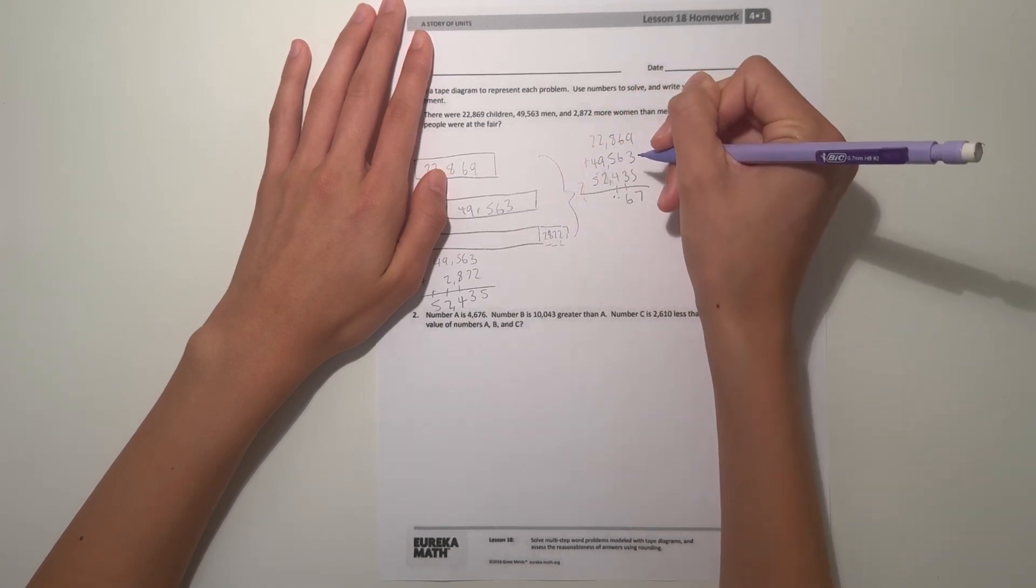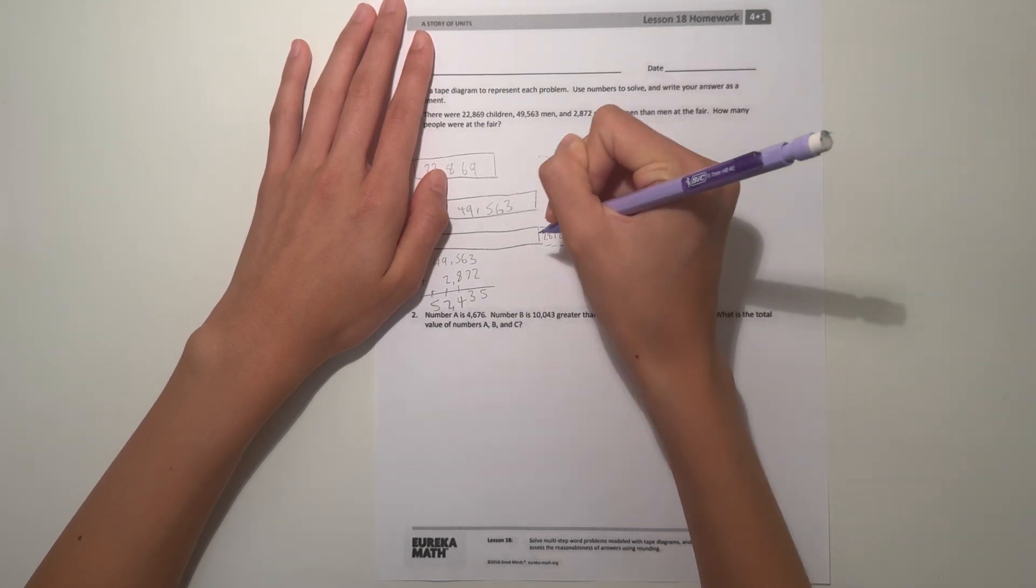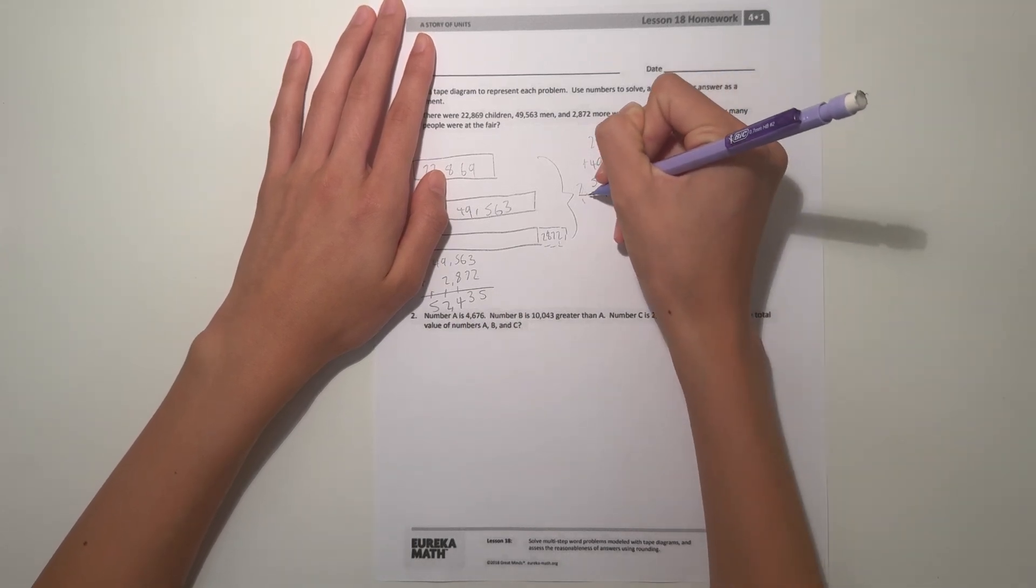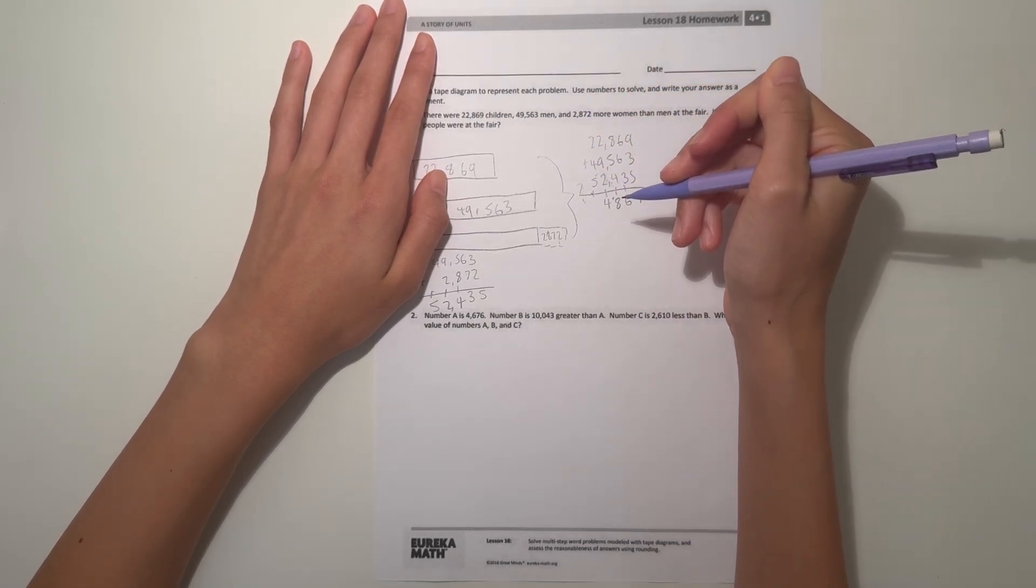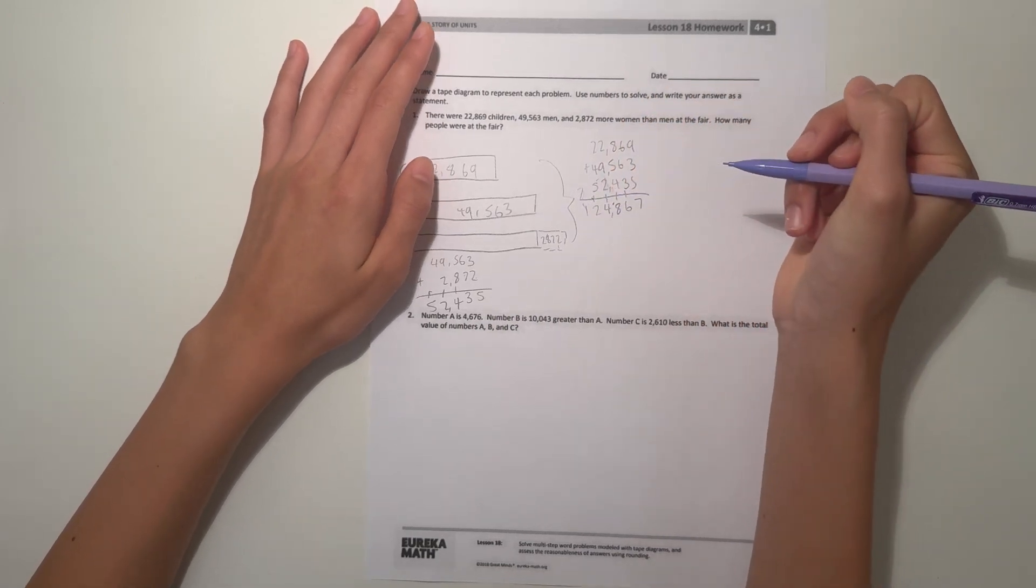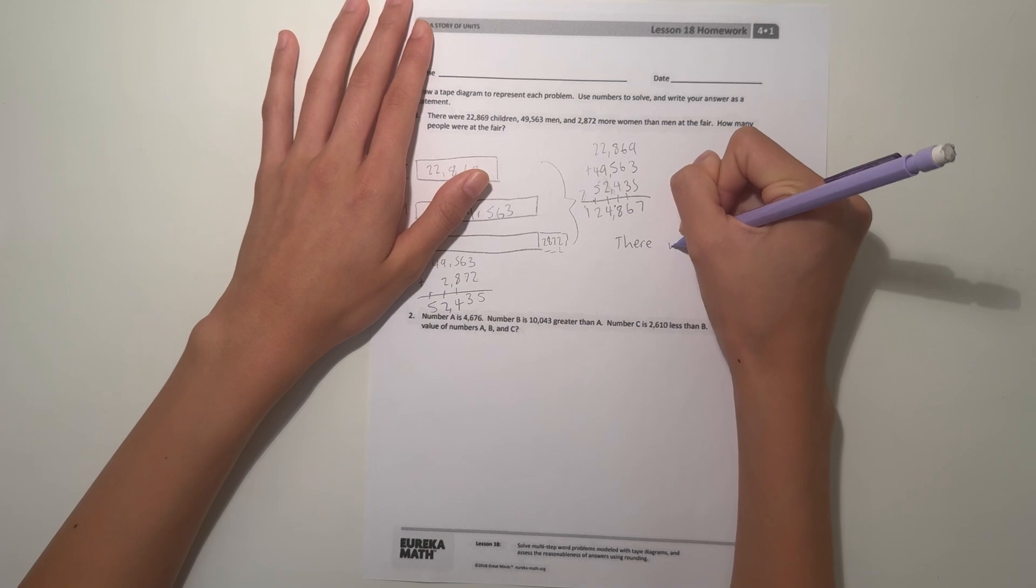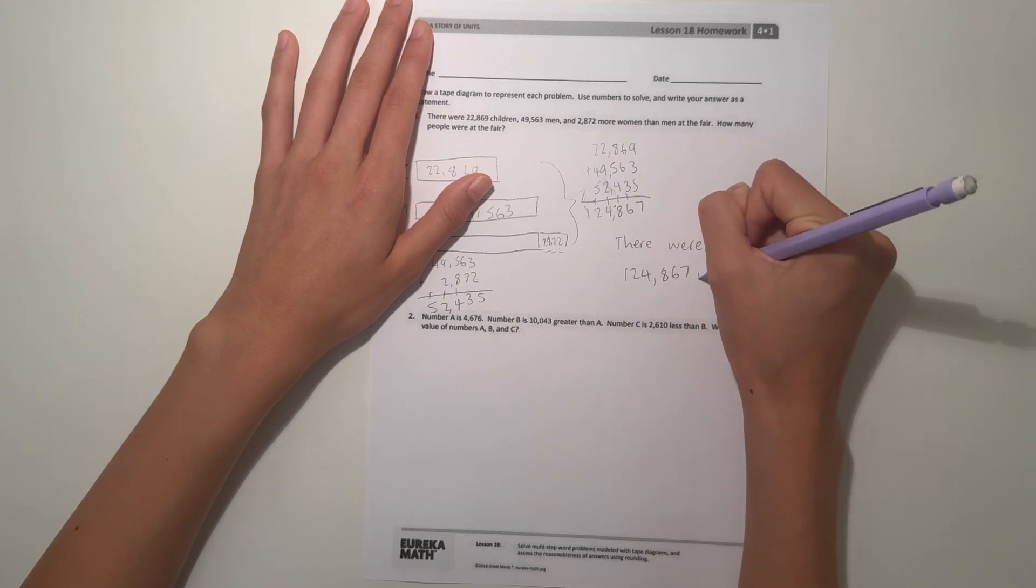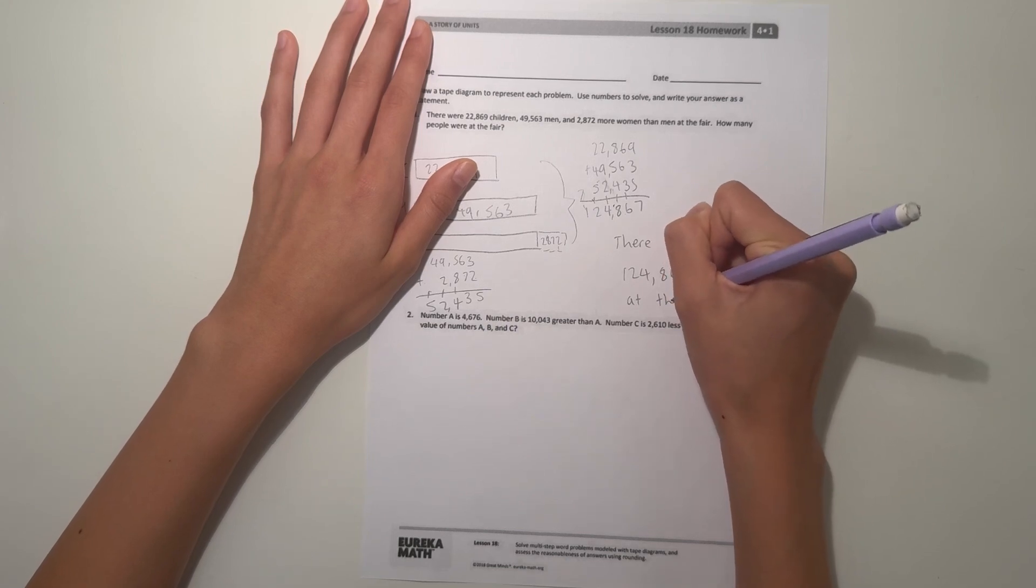8 plus 5 is 13 plus 4 is 17 plus 1 is 18, 2 plus 9 is 11 plus 2 is 13 and plus 1 would be 14, and 2 plus 4 is 6 plus 5 is 11 plus 1 is 12. So our answer is 124,867. There were 124,867 people at the fair.